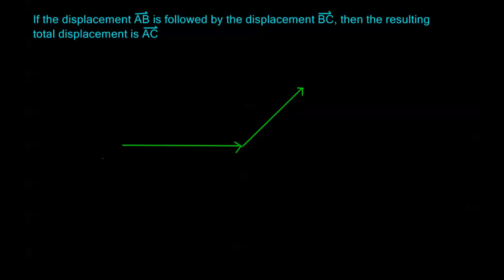So, let's say this is my A. I have this vector AB that takes me over here. I have another vector, BC, that takes my total displacement to C. Then, the resulting total displacement is the vector AC.